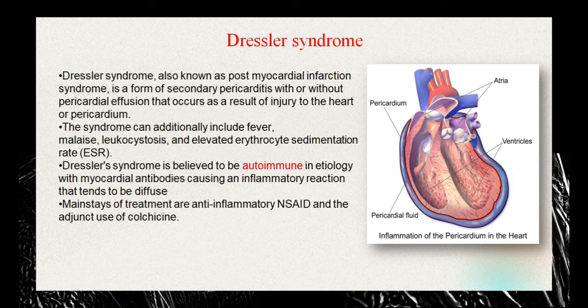The heart, skeletal muscles, and nerves are the three main tissues that are not regenerative. When myocardial infarction occurs and part of the heart dies, it doesn't regenerate. Instead, the dead part is consumed by the body's own immune system and replaced by connective tissue.